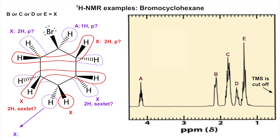Next up, using this as a representative: it's got its geminal neighbor on the same carbon, then these two over here - that's three - and then these two over here, four and five. Five plus one is six. And for this last hydrogen by itself: it has the geminal neighbor on the same carbon, then these two and these two - five total - so that's also a one-hydrogen sextet. And the last one: same thing, one-hydrogen sextet.